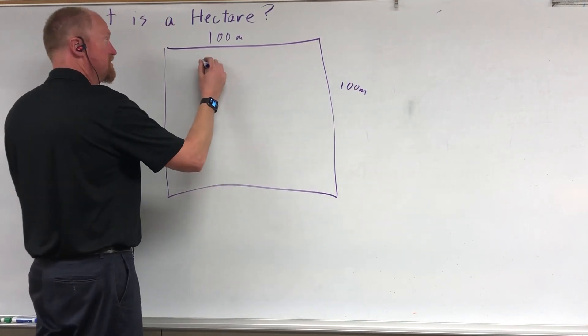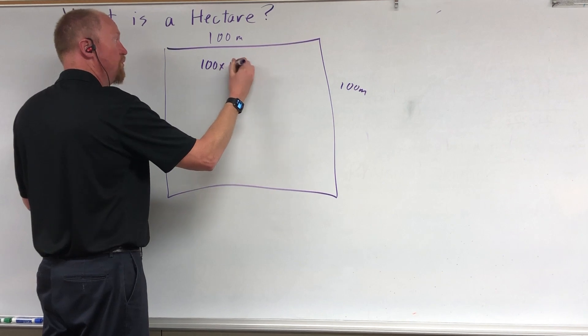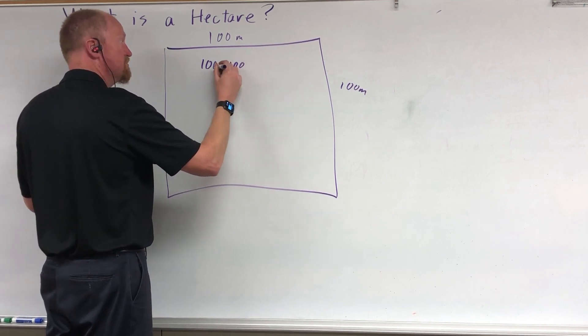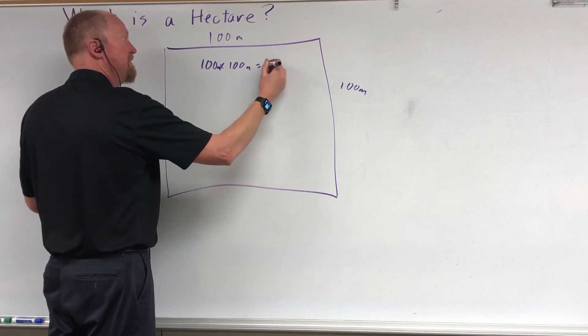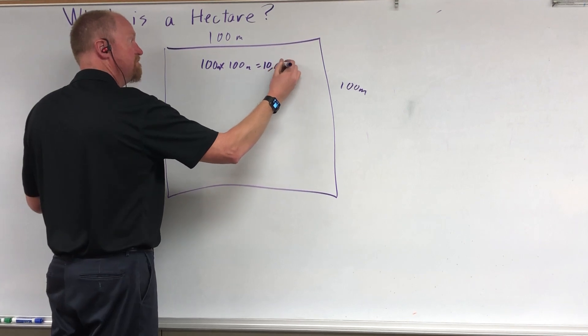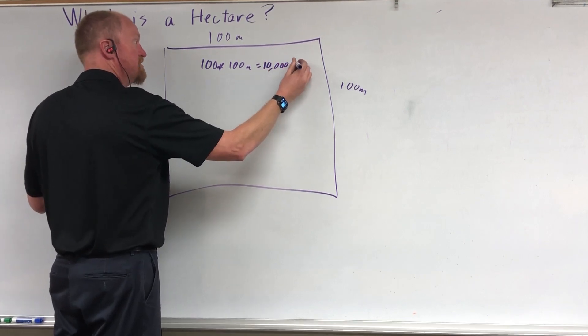So the total area is 100 times 100 meters, which would be 10,000 meters squared.